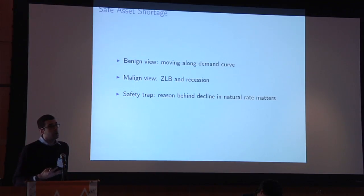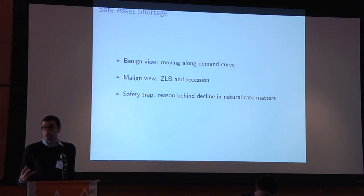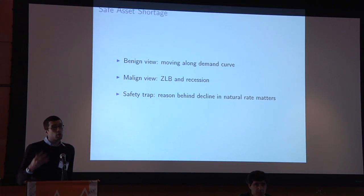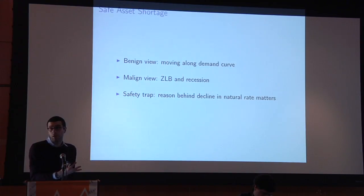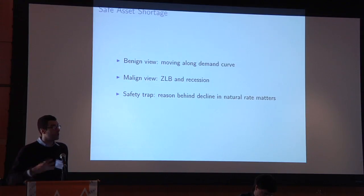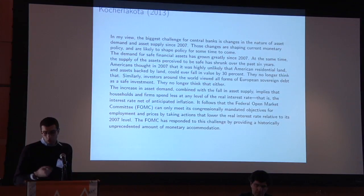The malign view, which I'll elaborate on, is that the first three stylized facts are related to the fourth — the increase in unemployment and the huge recession is related to these developments in asset markets. It's a version of the zero lower bound, but I'll argue that the reason why we reached the zero lower bound — specifically a shortage of safe assets — is very important for thinking about policy implications and what remedies can successfully alleviate the recession.